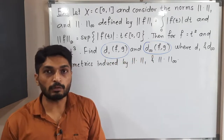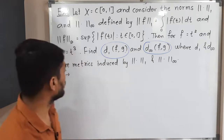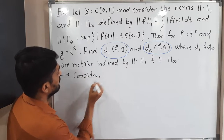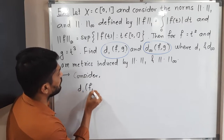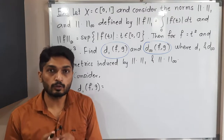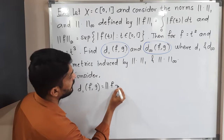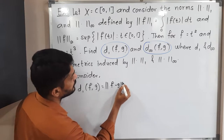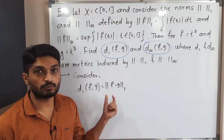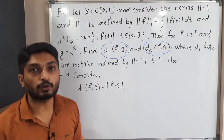First, we will find D₁(f,g). Consider D₁(f,g). Since D₁ is a metric induced by norm one, its definition is ‖f − g‖₁. Let us apply the definition of norm one.